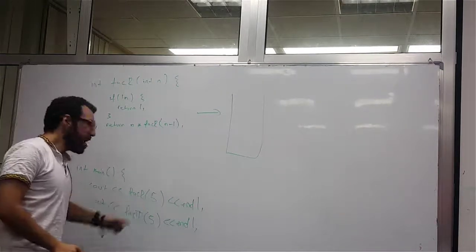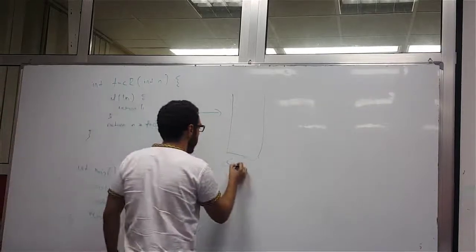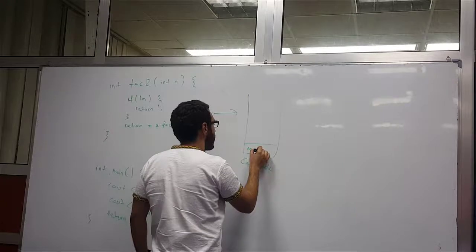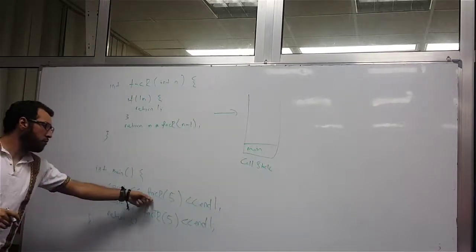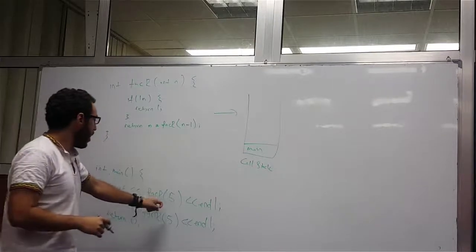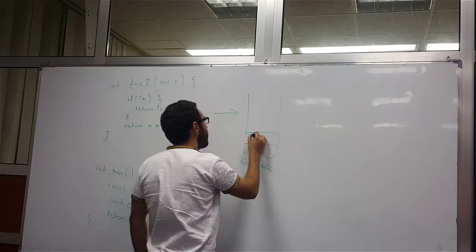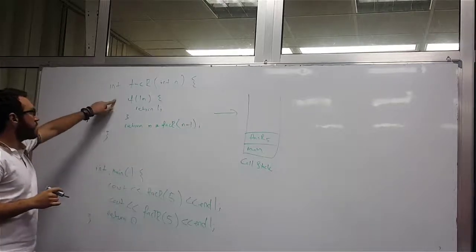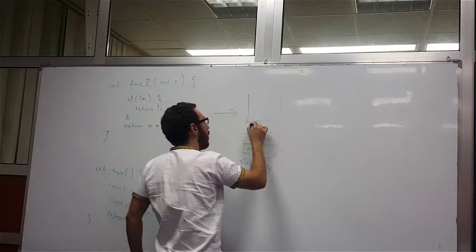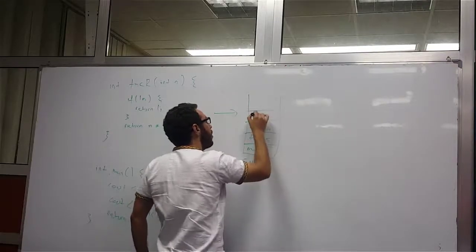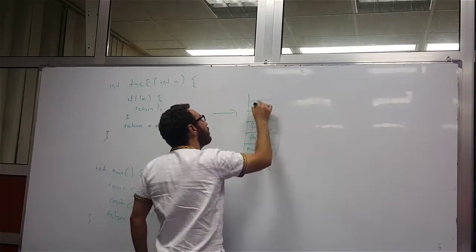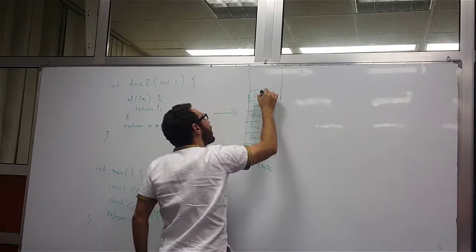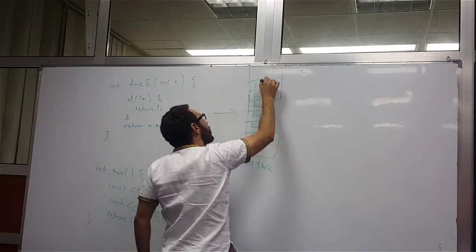Once we get the function call, this is our call stack. Since we start from main, we have the state of main as the first element in our call stack. Then once we make a call for factorial with input 5, we have a new object in our call stack — fact(5) — and since n is not equal to zero, it's going to call fact(4).